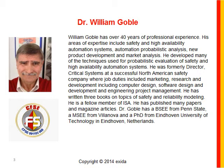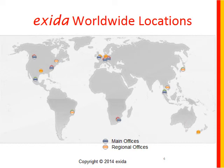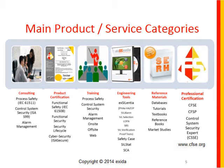I work for Exeter. Exeter is a global corporation with offices around the world. Exeter has a number of product categories, all having to do with automation systems safety, cybersecurity, and availability. We do maintain a lot of different product lines, and everything is oriented towards our core constructs.